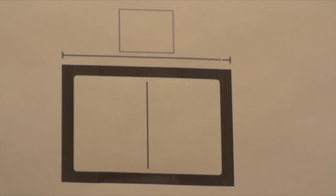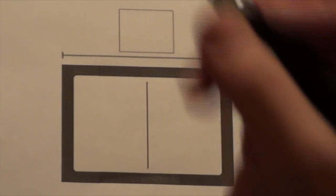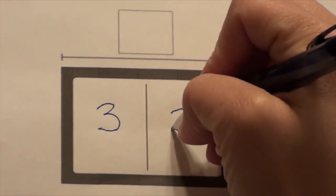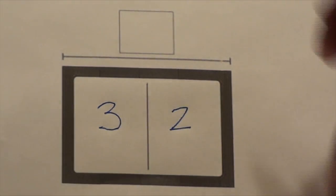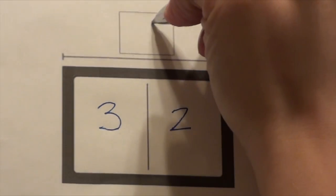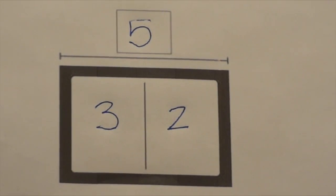For example, take a look at this picture. In the top row, there are three bowling balls on the left and two on the right. When wanting to find the total, we add the part three plus the other part two to get the whole or total amount of bowling balls. Three plus two equals five.